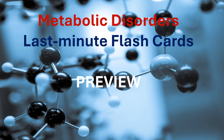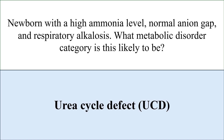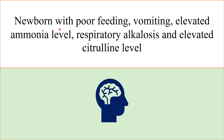Metabolic disorders last minute flashcards. A newborn with a very high ammonia level, normal anion gap, and respiratory alkalosis — what metabolic disorder category is this likely to be? Urea cycle defect. The key words here are high ammonia level and normal anion gap.